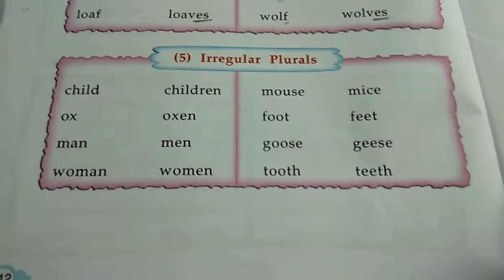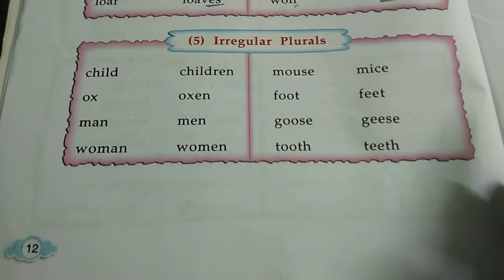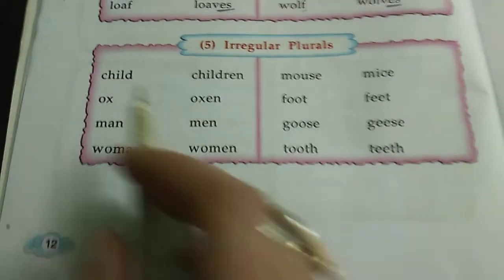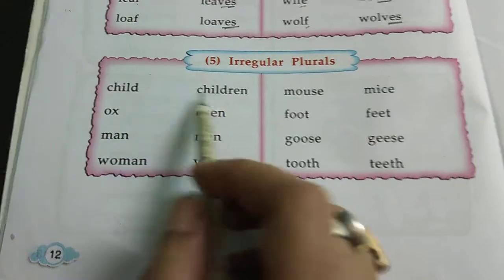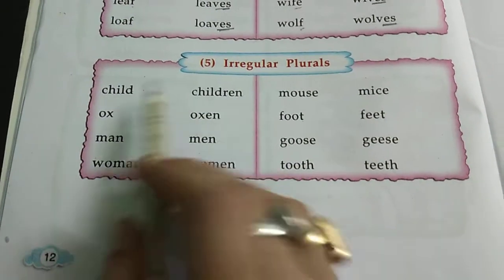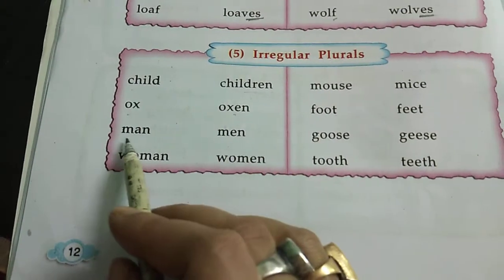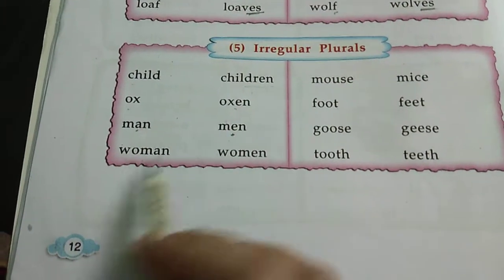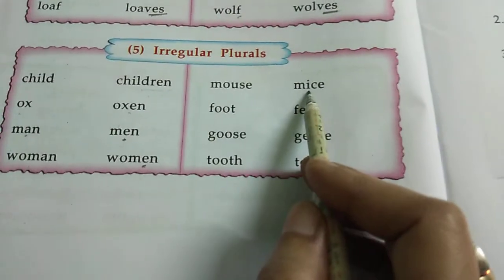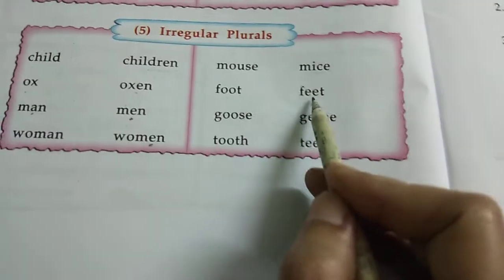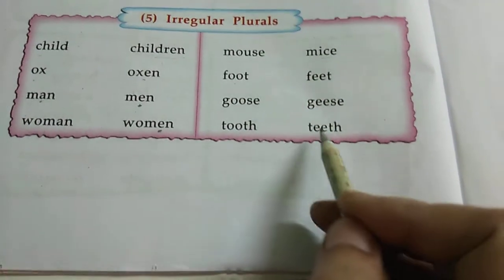Next are irregular plurals. Irregular means these have a different form — you don't just add a suffix; the word changes itself. Child becomes children, ox becomes oxen, man becomes men, woman becomes women, mouse becomes mice, foot becomes feet, goose becomes geese, tooth becomes teeth.